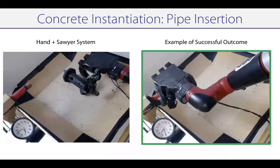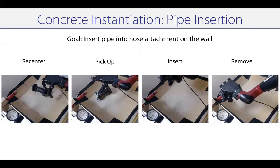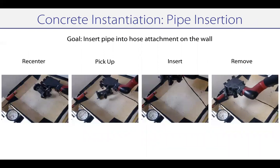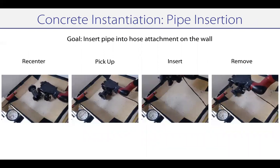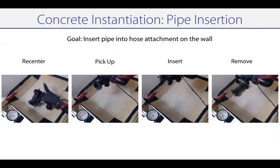We next consider a second task, which involves pipe insertion. The goal here is to pick up a cylindrical pipe object and insert it into a hose attachment in the wall. A successful outcome is shown on the right. Here we might want to learn many different tasks, like recentering, picking up, insertion into the hose attachment, and removal from the hose attachment — all learned together with some providing resets for others.